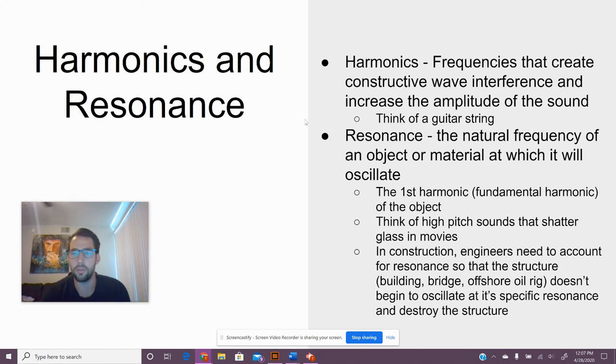But resonance is the natural frequency of an object or material at which it will oscillate. So when you flick the edge of a glass and it makes a sound, that's the resonance, the natural frequency for that object. And it's always going to pick the first harmonic. Whenever you just flick a glass, it's going to choose its first harmonic. It doesn't just happen with glasses, though. Everything has resonance.